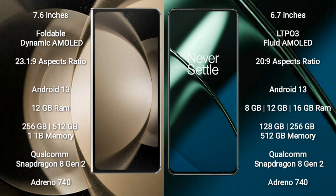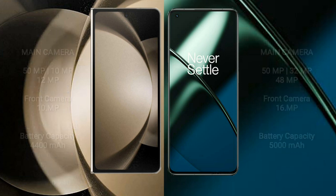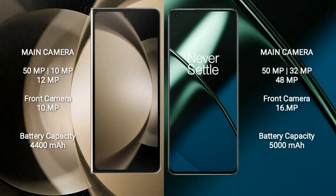The OnePlus 11 comes with 8GB, 12GB, or 16GB of RAM, and 128GB, 256GB, or 512GB of internal storage. It is also powered by the Qualcomm Snapdragon 8 Gen 2 processor with Adreno 740 GPU.